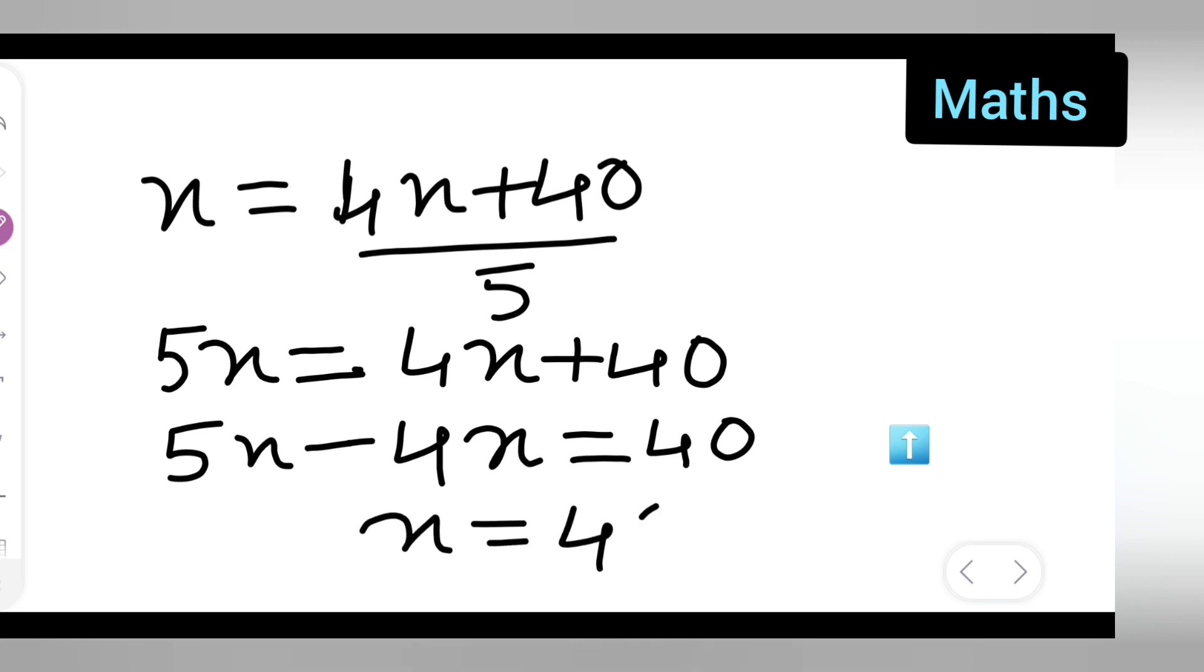So you will get 5x minus 4x will be x equals 40. That is your answer.